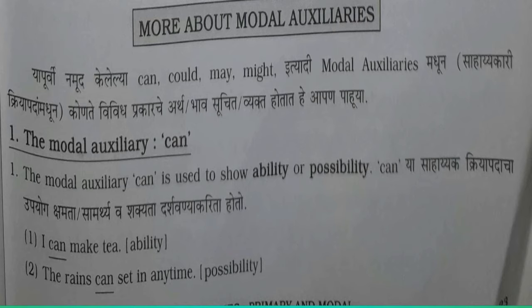More about Modal Auxiliaries — from the previously mentioned modals like Can, May, Might, let's see what various meanings they express. The Modal Auxiliary Can is used to show ability or possibility. Using 'can' with a verb shows ability or capacity. Example one: 'I can make tea' — 'can' indicates ability. Next example: 'The rain can sit in anytime' — 'can' here shows possibility.